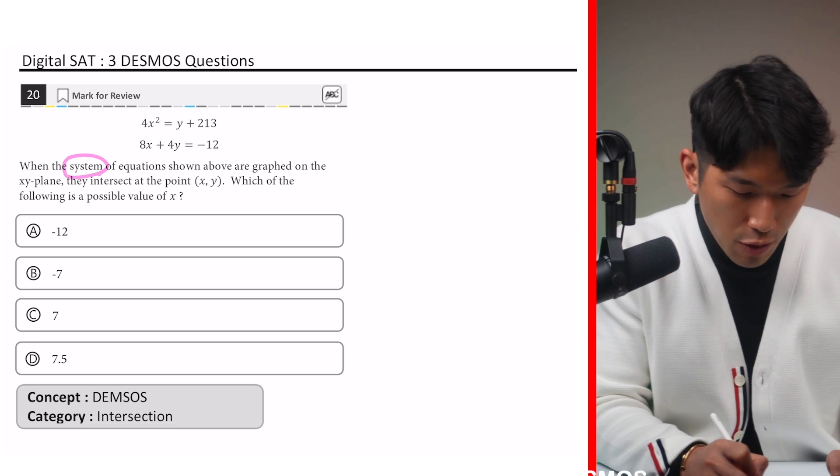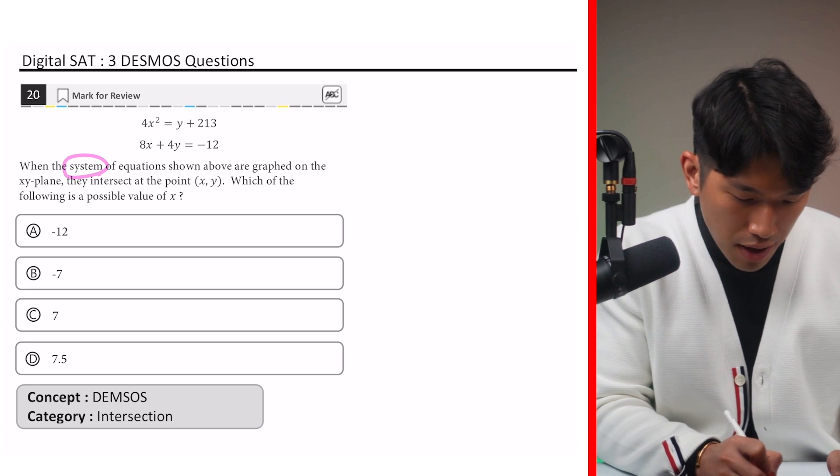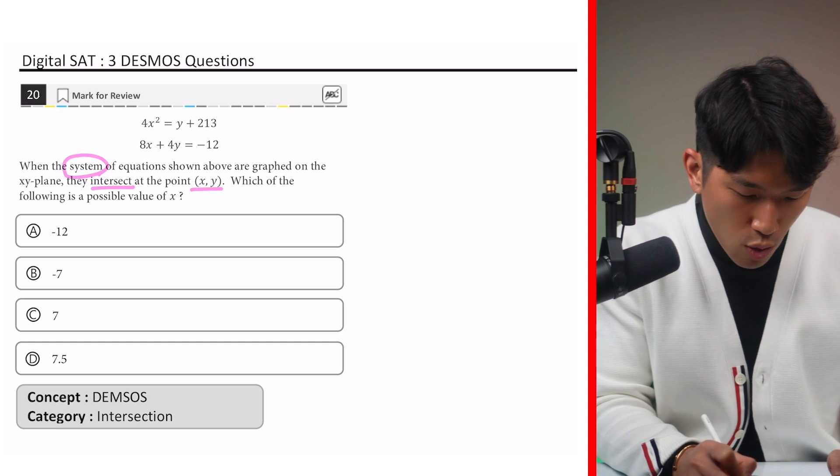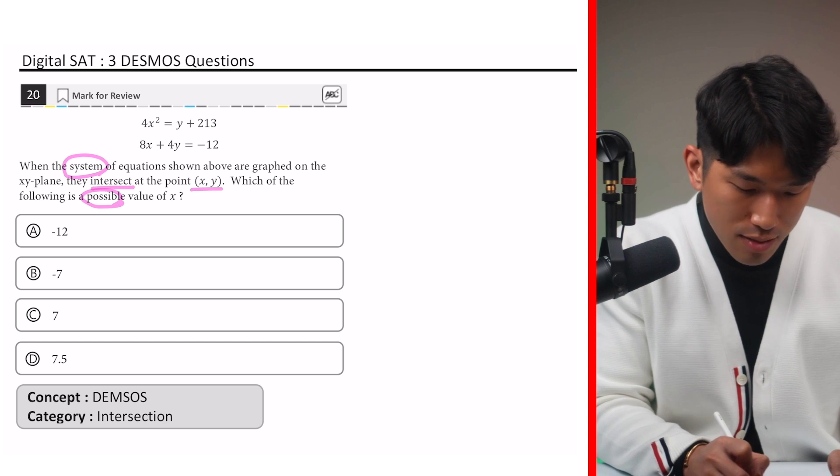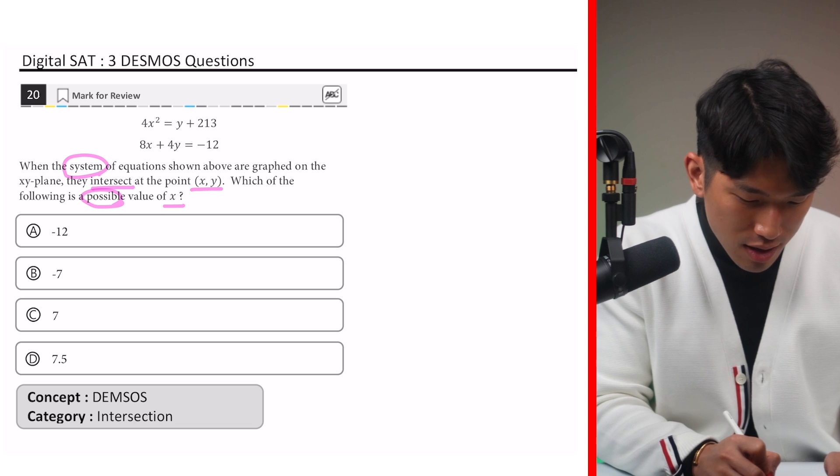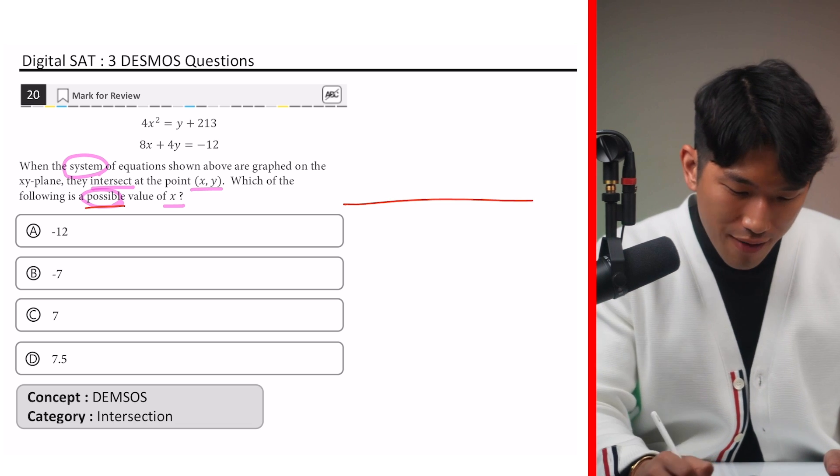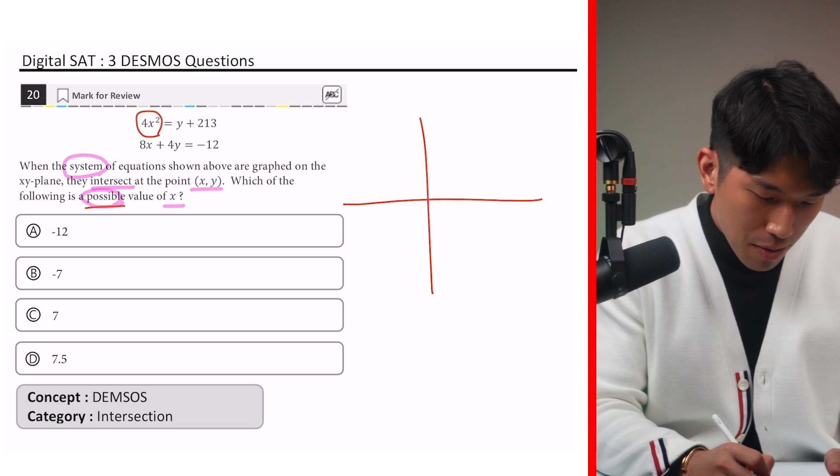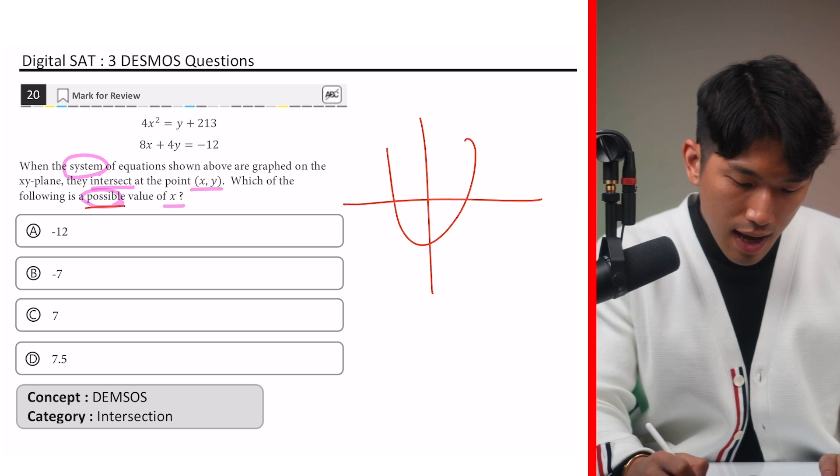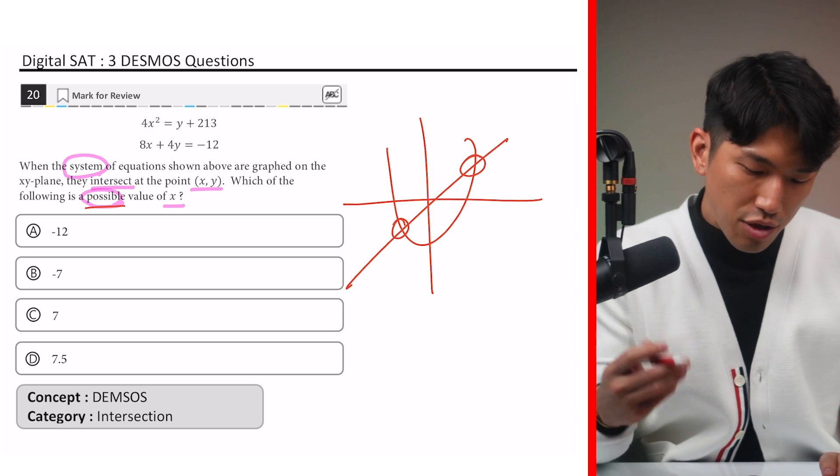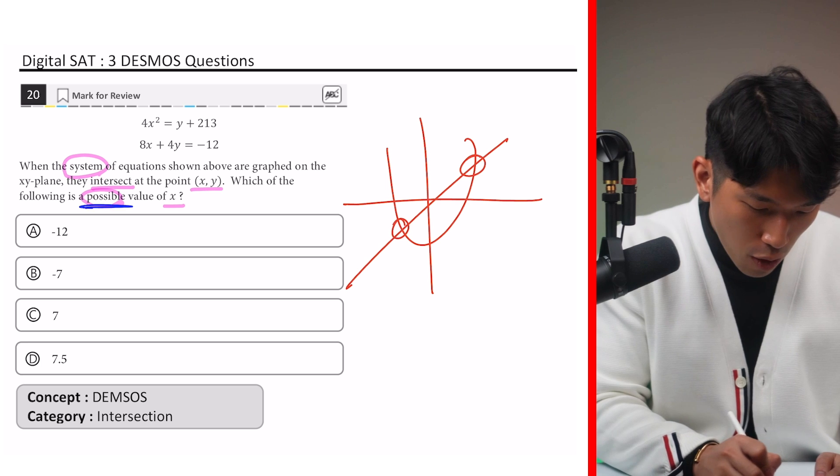Let's go to the next type. So the question says, when the system of equations shown above are graphed on the x-y plane, they intersect at point x-y, which the following is a possible value of x. So why does it say possible, right? Well, if you graph this out, we know that we're working with a parabola and a line. And sometimes they can have two intersection points. And of the two, we are looking for one of them.